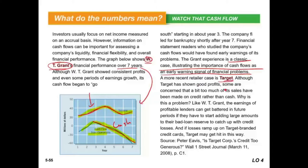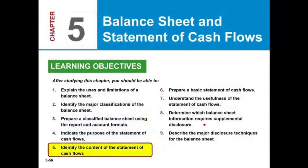A more recent example is Target, which showed good profit, but some were concerned that too much of its sales were made on credit rather than cash — a similar pattern to W.T. Grant. Once you see net income increasing but cash flow from operations flat or going down, that's an early signal the company is not generating enough cash. Target was selling a lot on credit and couldn't collect, experiencing bad loans. The cash flow statement is an early warning signal for such problems.